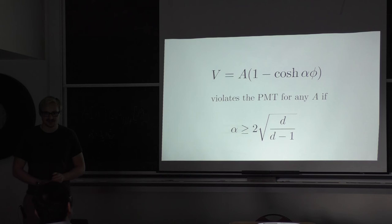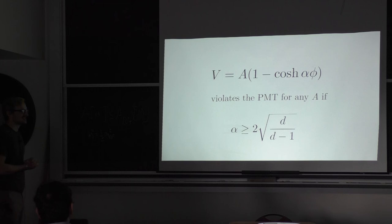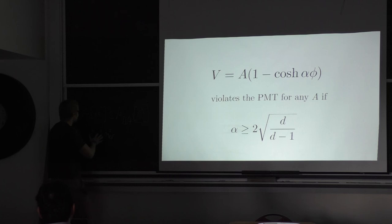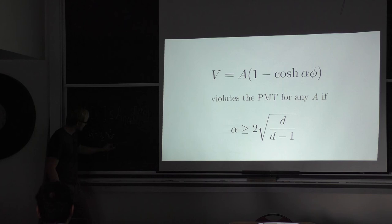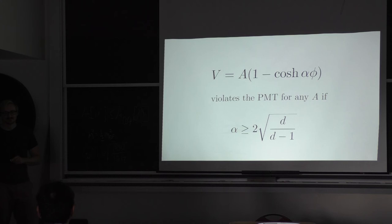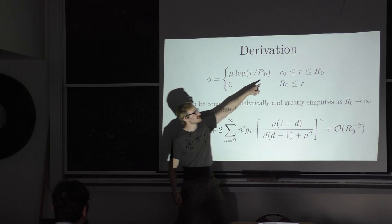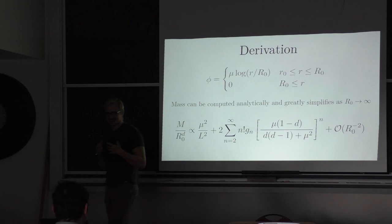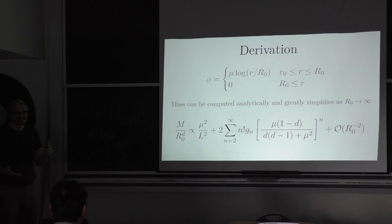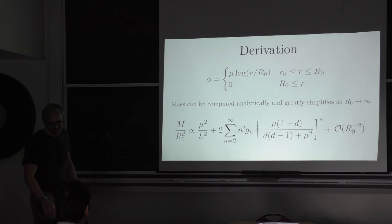The Penrose inequality is stronger than the positive mass theorem for spacetimes containing a marginally trapped surface. In the usual asymptotically flat four-dimensional formulation, it says M is greater than the square root of the area of the marginally trapped surface divided by 16 pi. At the analytic level one can discriminate the two: without taking the large-R_0 limit, there is an R_0-dependent version of the constraint, which is uglier but distinguishes them.